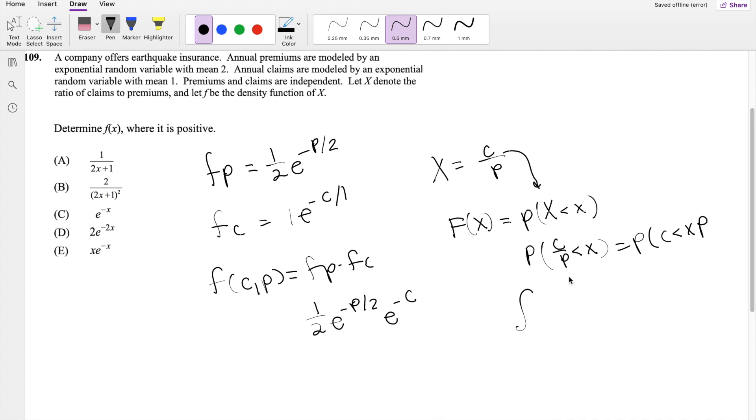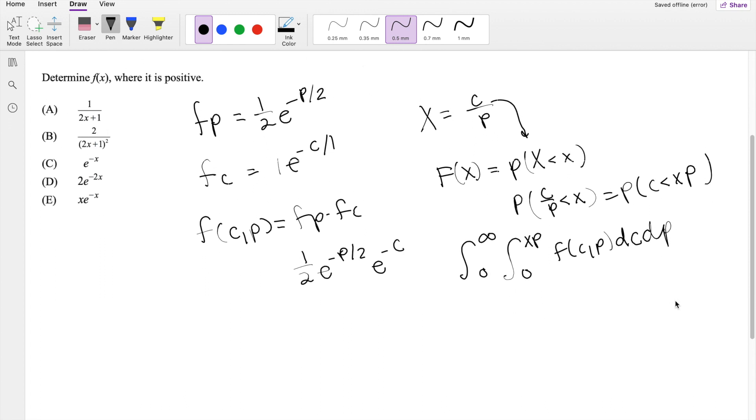Plugging in the big X in here, you get this is equal to the probability that C over P is less than some little x. So then that is equal to probability that C is less than x times P. And where is C ranging from? C is an exponential, so it's going from 0 to xP. And we know P is also exponential, so it's going from 0 to infinity.